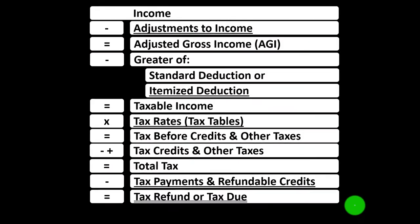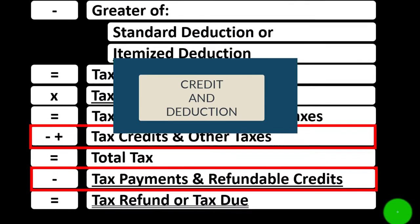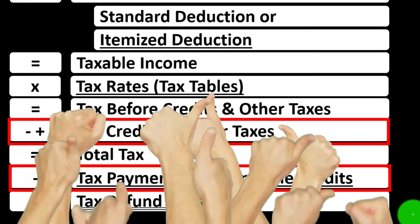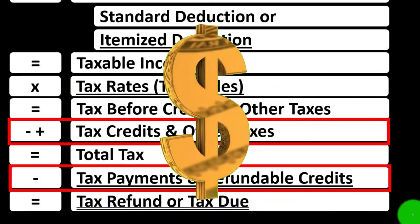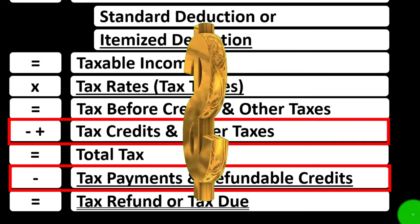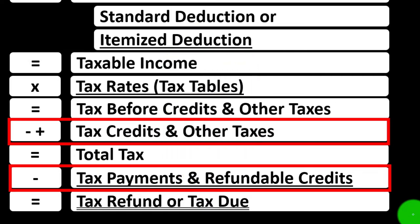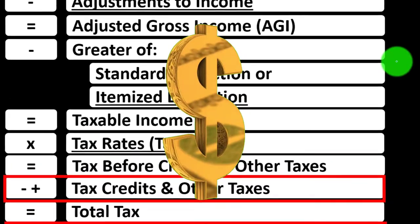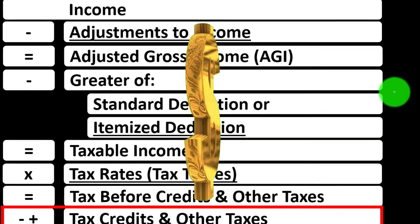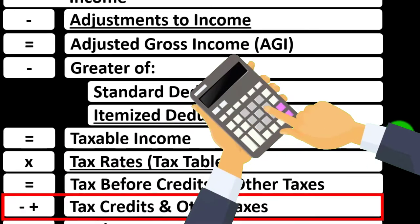Looking at the income tax formula down in the credit area — both credits and deductions are good, but if you had a dollar credit versus a dollar deduction, the credit is typically better because you would generally get the full dollar's worth on the credit, as opposed to a dollar deduction, which is just a dollar decrease to taxable income before tax is calculated on it.